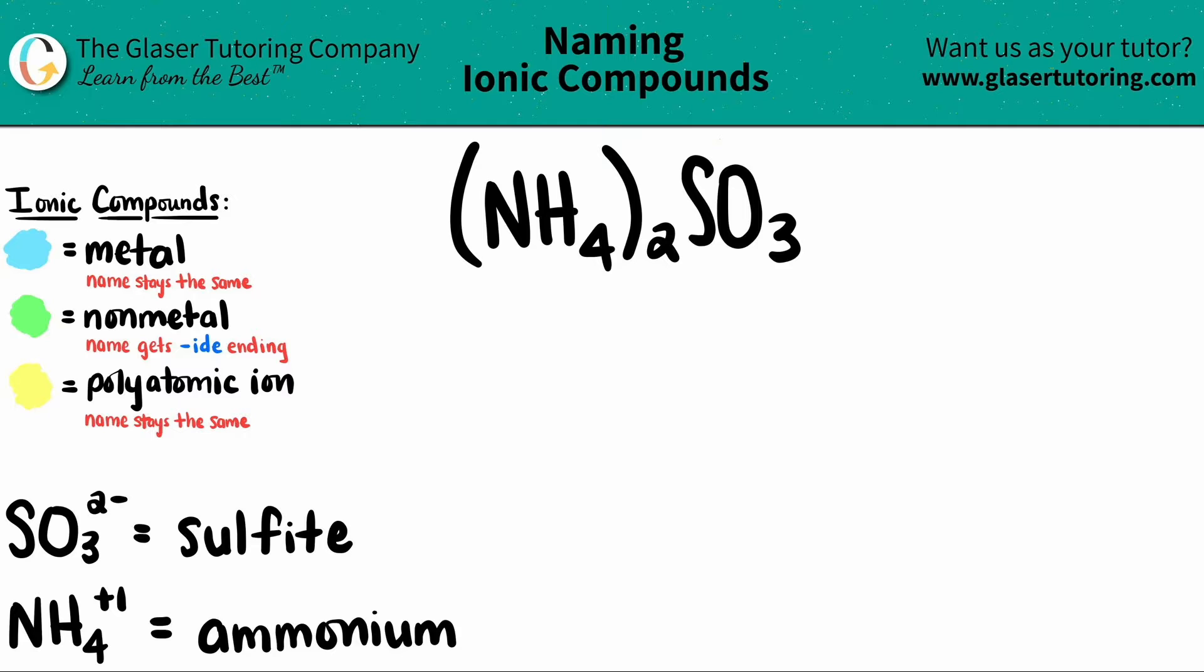So if you have an ionic compound and you don't have any metals, this means that you have two polyatomics.